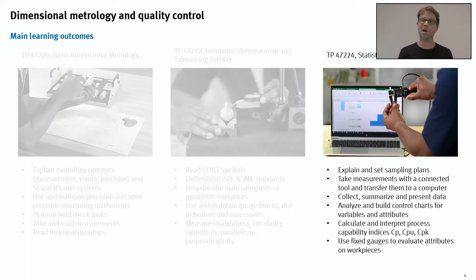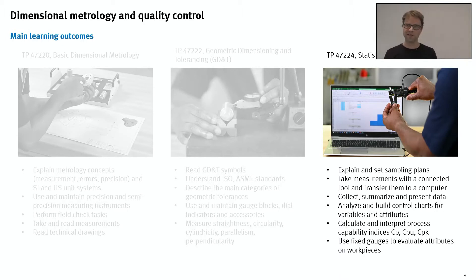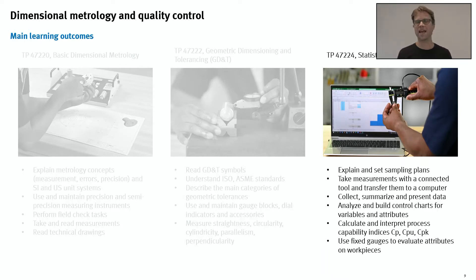For the third package, Statistical Process Control, students will learn how to set sampling plans, take measurements with connected tools and transfer them to a computer, collect, summarize and present data, and analyze and build control charts for variables and attributes. They will also calculate and interpret capability indices like Cp, CPU, and Cpk, which are really common on the shop floor.